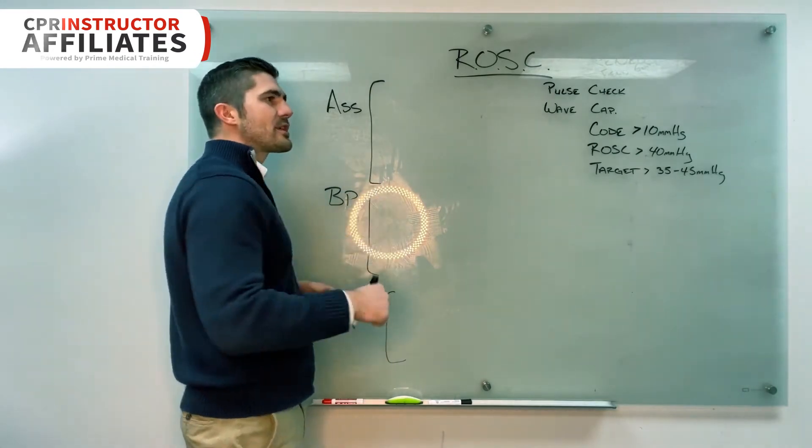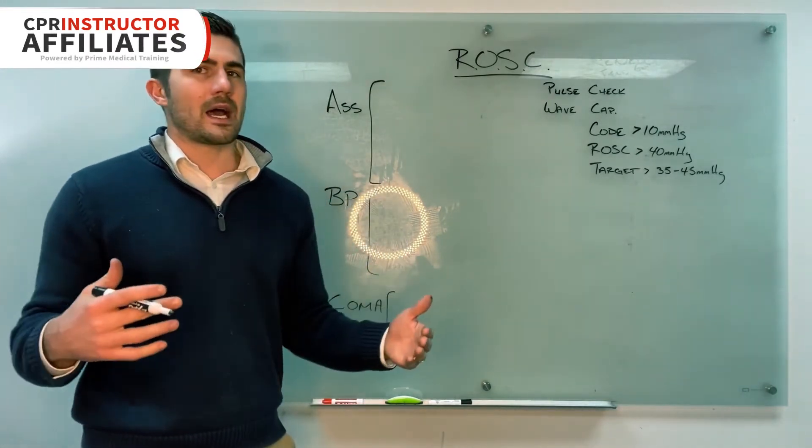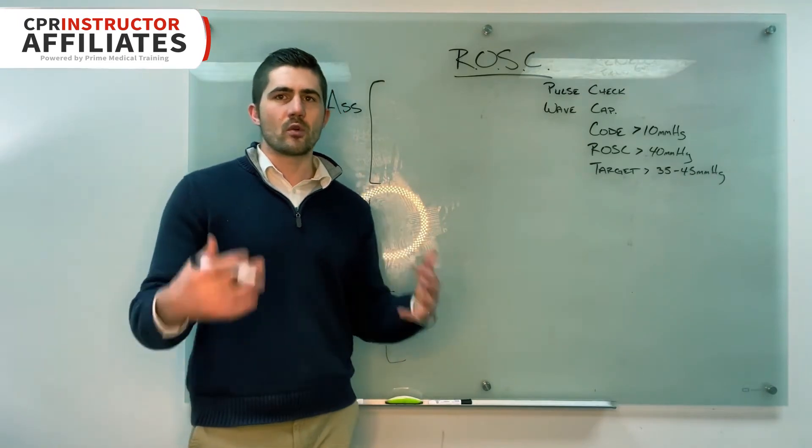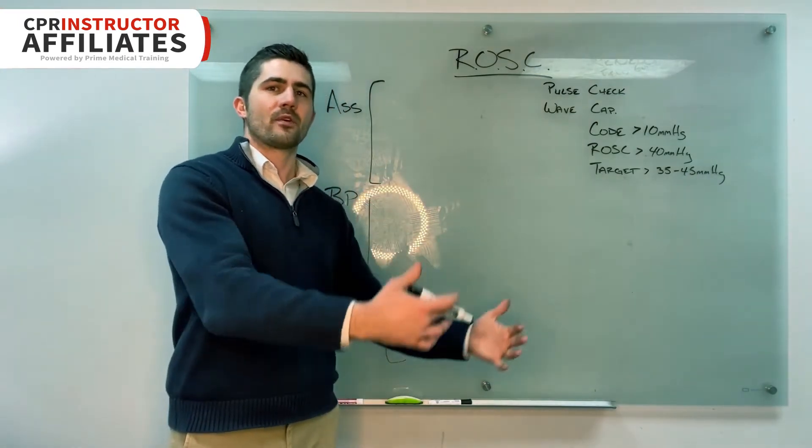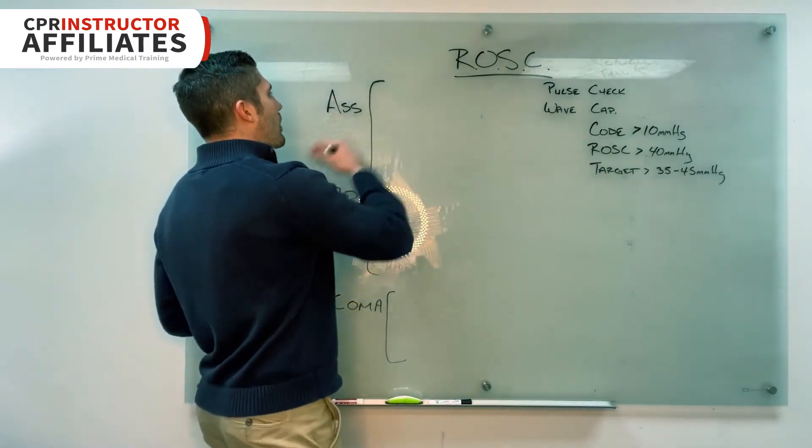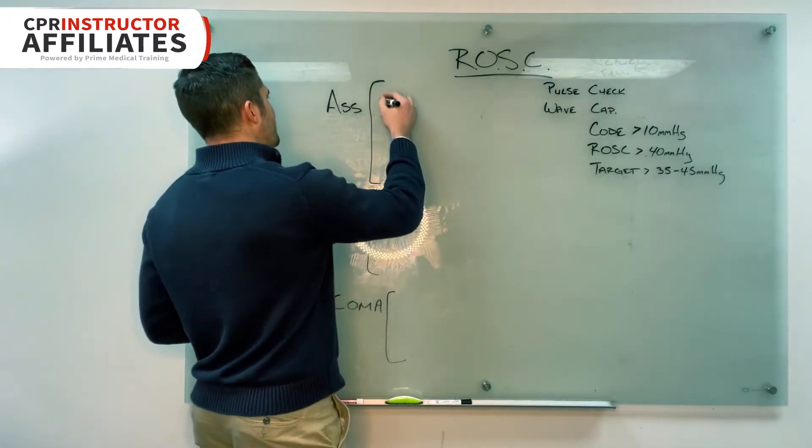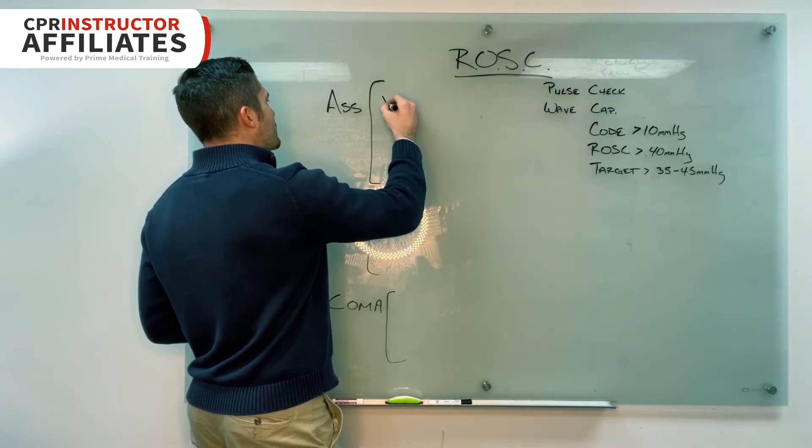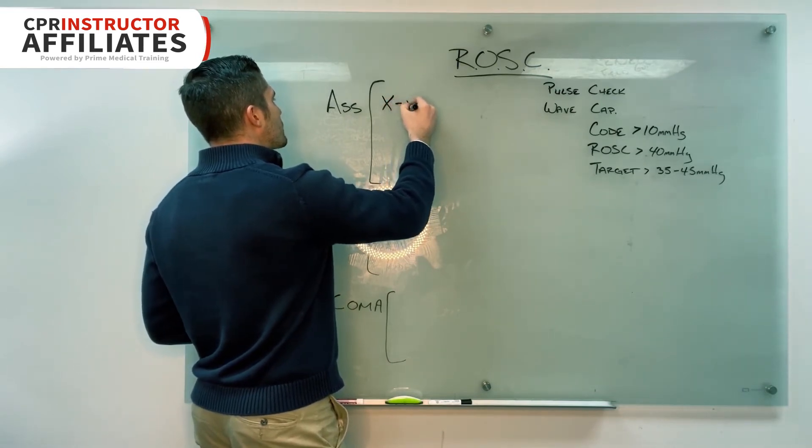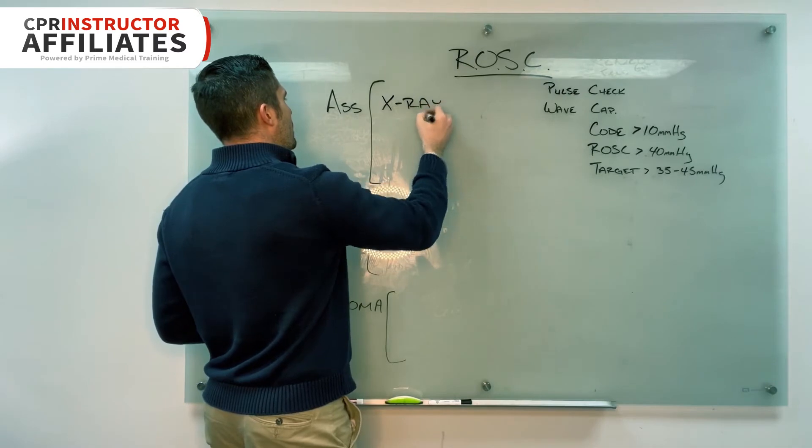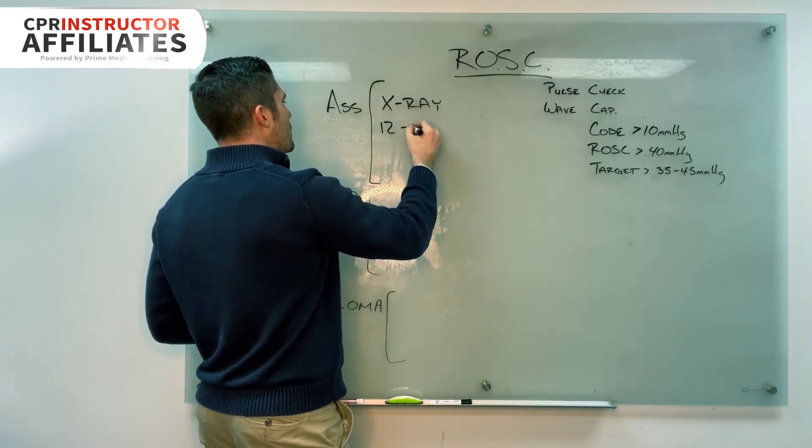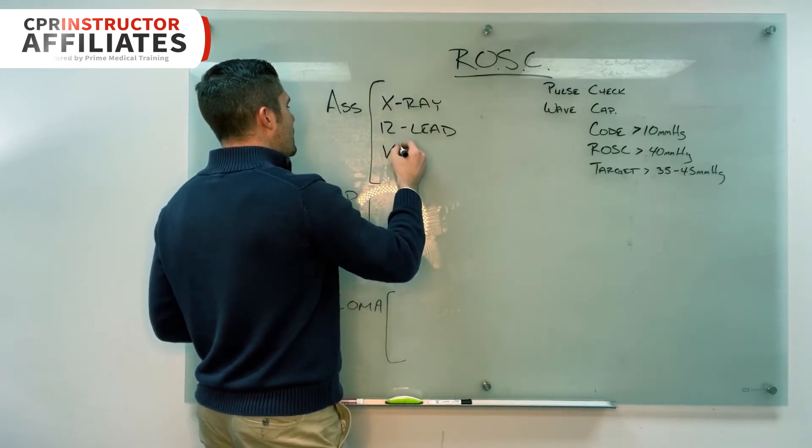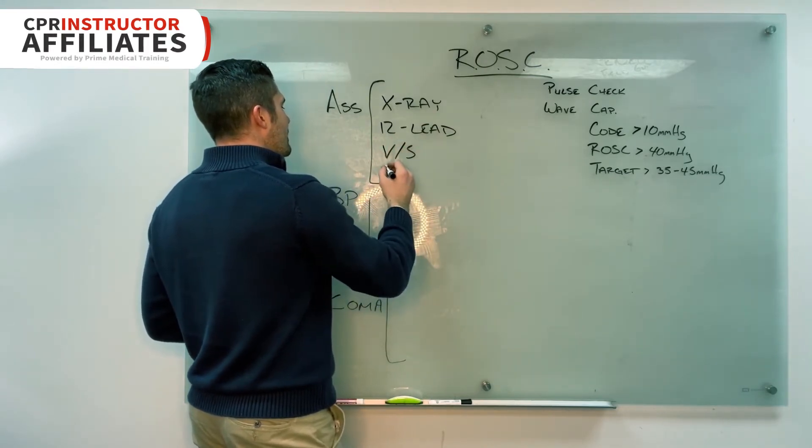And the answers that I want are directly tied to the mega code skills test. And so these are critical criteria. They have to verbalize these in order to pass. And so I want to make sure that they know what they are. Now assessment is going to be chest x-ray, a 12 lead, vital signs, and labs.